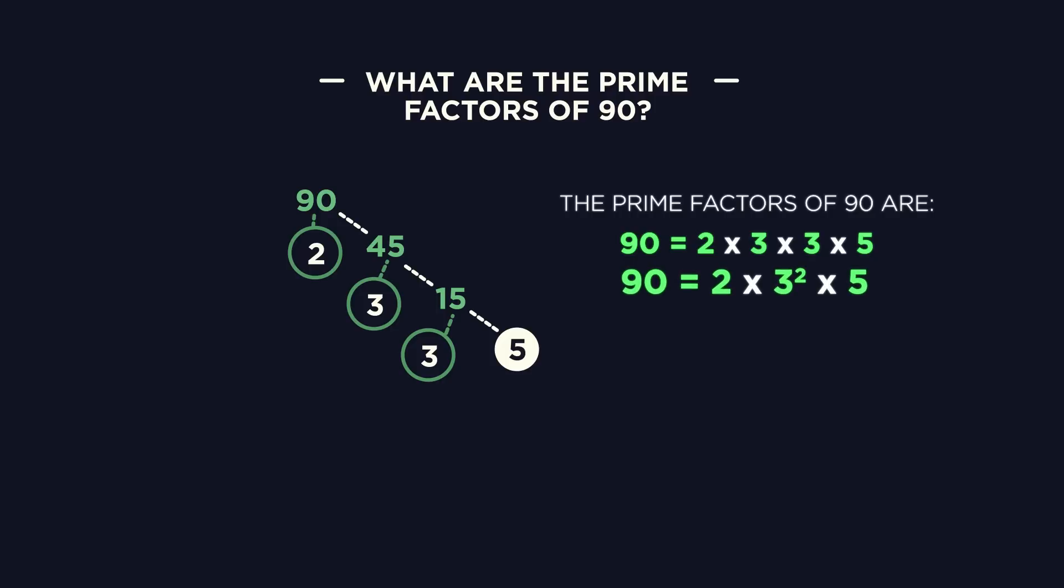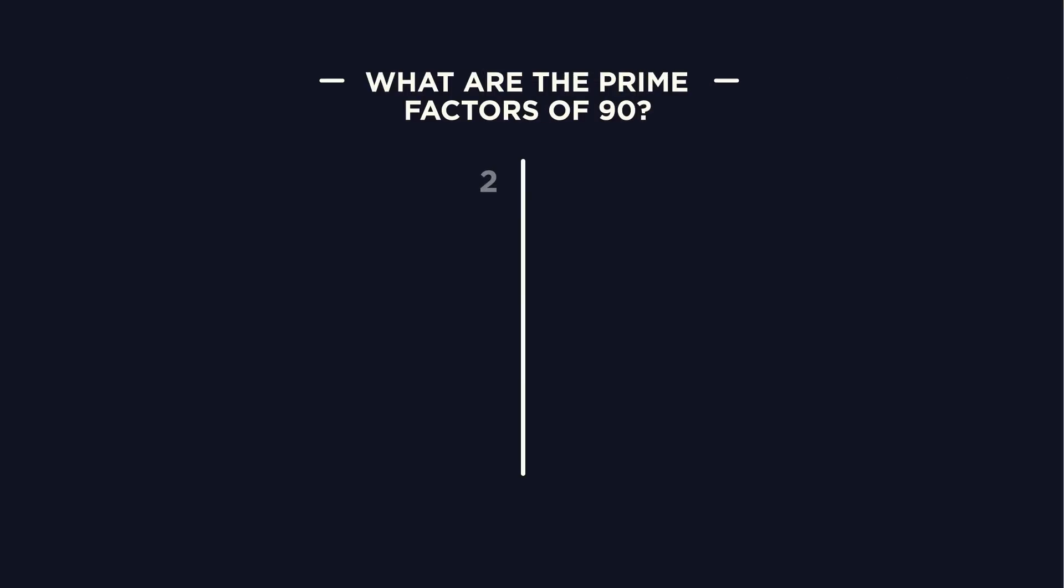If you don't like using a prime factor tree, maybe you'll prefer using the list. 2 goes into 90 45 times, 3 goes into 45 15 times, 3 goes into 15 5 times, 5 goes into 5 once. Just make sure you always end up at 1.